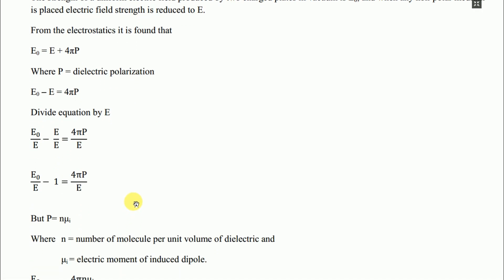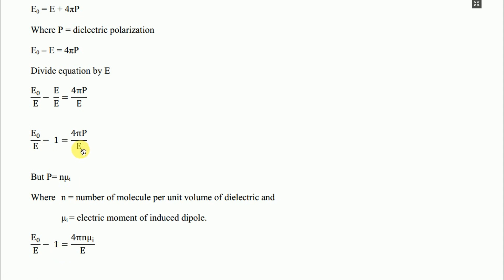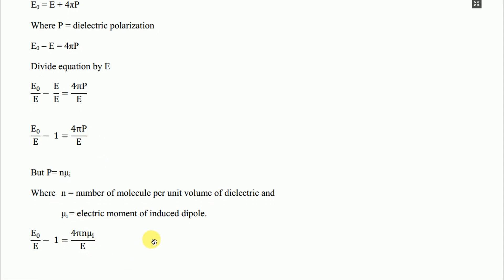The value of P, the dielectric polarization, is equal to n·μᵢ, where n is the number of molecules per unit volume of the dielectric material and μᵢ is the electric moment of the induced dipole. Replacing P with n·μᵢ, we get: E0/E − 1 = 4πn·μᵢ/E. Rearranging: E0/E = 1 + 4πn·μᵢ/E.